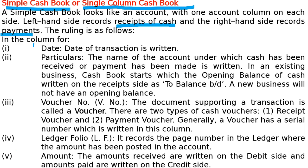The rulings are as follows. The first column on both left and right hand sides is the date, where the date of a transaction is written. The second column is the name of the account under which cash has been received or payment has been made. The debit side records cash received, the credit side records payments.